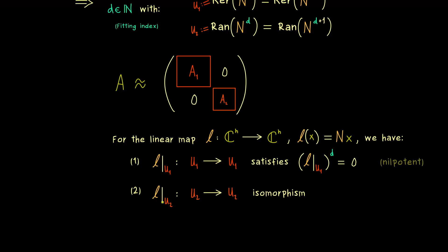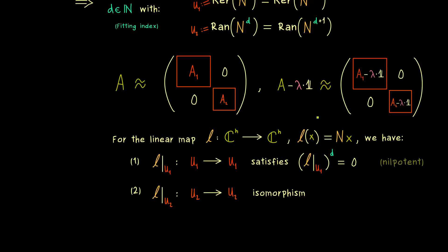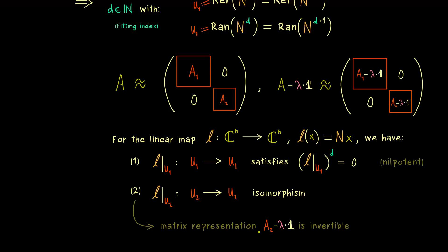So we have two abstract linear maps for which we can find matrix representations, and these are connected to our submatrices A1 and A2. If we consider A minus lambda times the identity on the left-hand side, we just subtract something on the diagonal, and this completely translates to our block matrices as well — keeping in mind that these identity matrices have different sizes. We immediately get that these block matrices are matrix representations of our abstract linear maps. For example, the second one has the matrix representation A2 minus lambda times the identity. Since the linear map is an isomorphism, the matrix representation must be invertible — therefore, by definition, lambda cannot be an eigenvalue of A2.